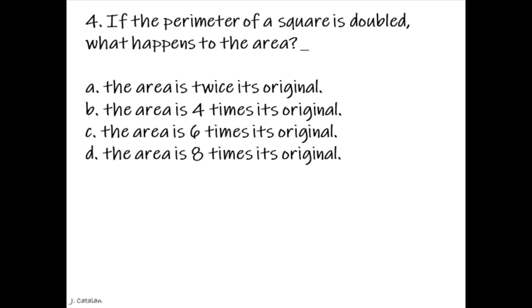Question: If the perimeter of a square is doubled, what happens to the area? Answer: The area is 4 times its original.